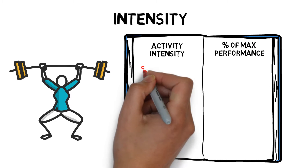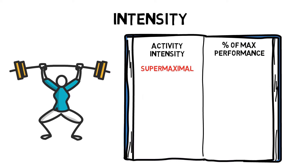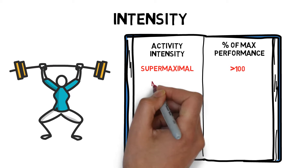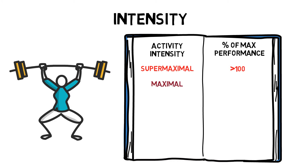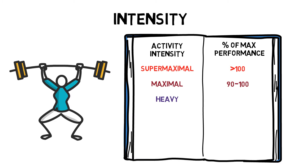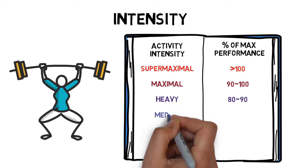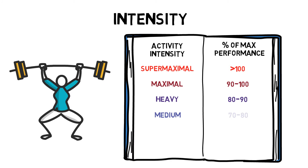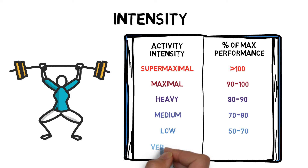Super maximal intensity is anything over 100% of maximal performance. Maximal intensity is 90 to 100%, heavy is 80 to 90%, medium is 70 to 80%, low is 50 to 70%, and very low is anything under 50%.